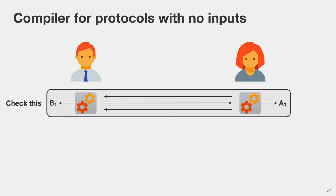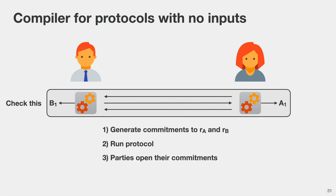What does it mean to check an execution? Both Alice and Bob will first generate commitments to a random tape — RA for Alice and RB for Bob. Then they run the protocol where all random decisions are deterministic functions of their random tapes. After the protocol finishes, the parties reveal the random tapes by opening the commitments, and each party can check whether the messages received are consistent with the opened random tapes.